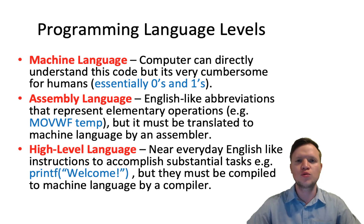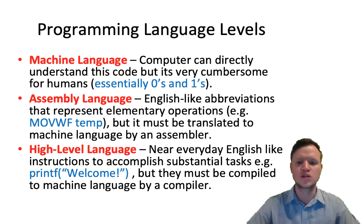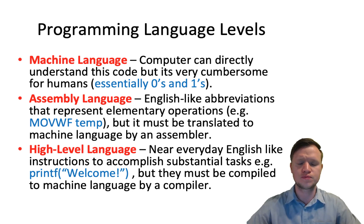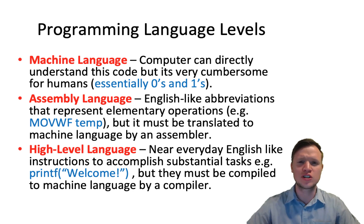They decided assembly language was also quite difficult to understand, so they upgraded it and made it even more human-like, creating high-level language — and this is what we're going to use to program. High-level language is near everyday English. For example, 'printf welcome' — where welcome is in double inverted commas — means we want to print out to the screen the word 'welcome'. That's much closer to everyday English and much easier to understand than 'MOVWF'. So the three language levels are machine language, assembly language, and high-level language. Thank you for watching, and I hope to see you soon in C programming.